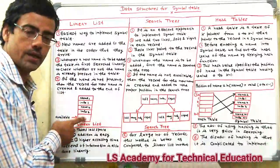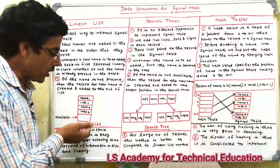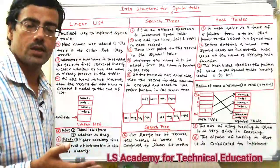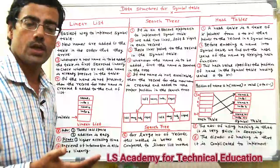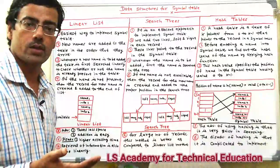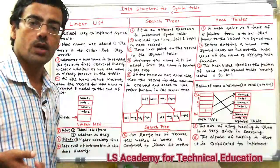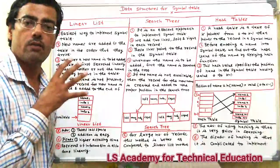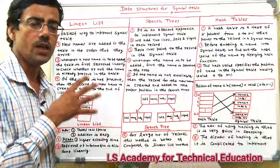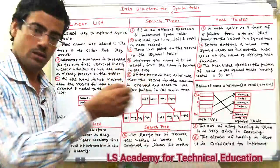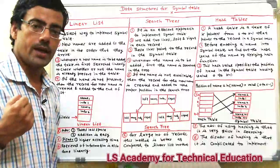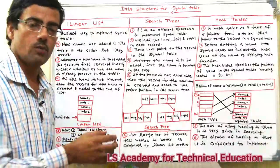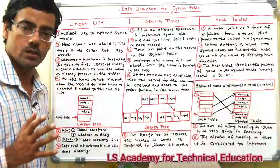When searching, you start linearly from the beginning. When inserting data, you check from the start. If the name is already available, it is a multiple-defined name; if it is not present in the table, a new record is created.